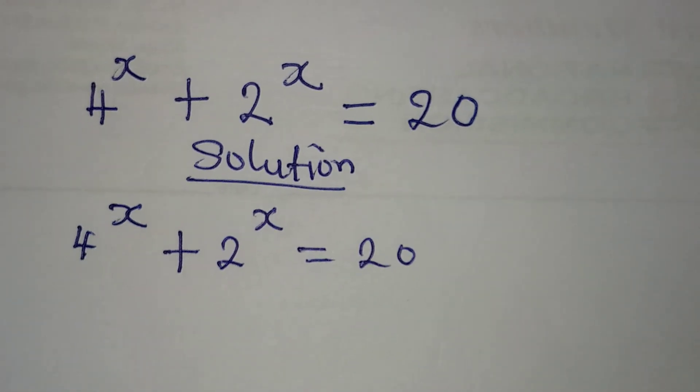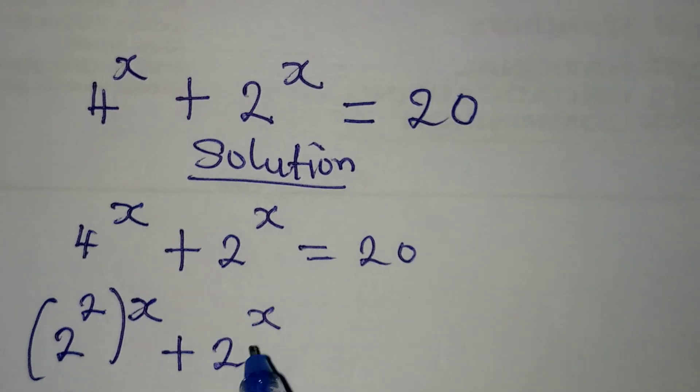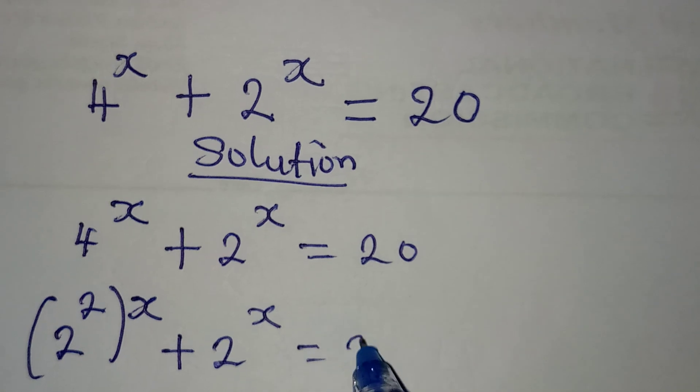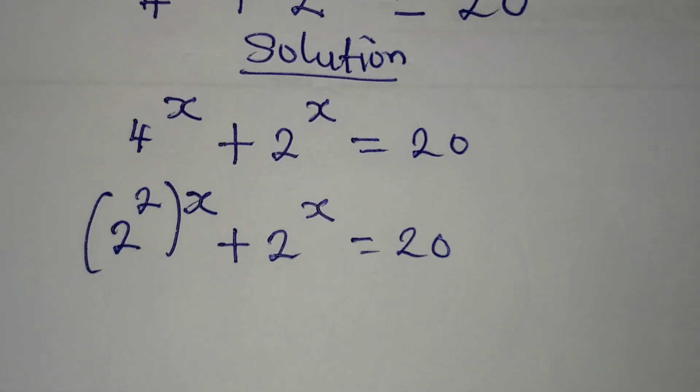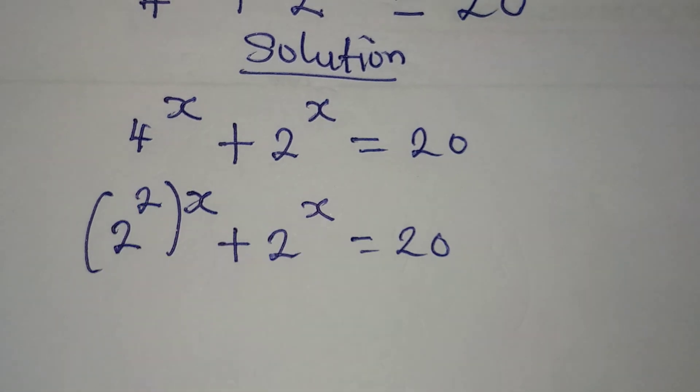So what do I do? Remember that this is the same thing as 2 to the power of 2, then we have x out there, then plus 2 to the power of x equals 20. I did this because 4 here is the same as 2 to the power of 2.